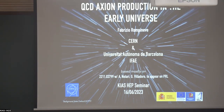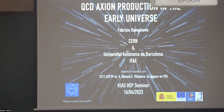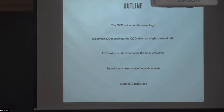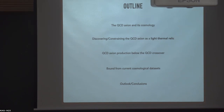Thanks for the invitation. This talk is mostly based on recent work done with Alessio Notari and Giovanni Villadoro — based in Spain and Trieste respectively — which will soon appear in PRL. The outline: a review of the QCD axion and its cosmology, then focus on discovering or constraining the QCD axion as a light thermal relic, and finally the progress achieved with our recent work.